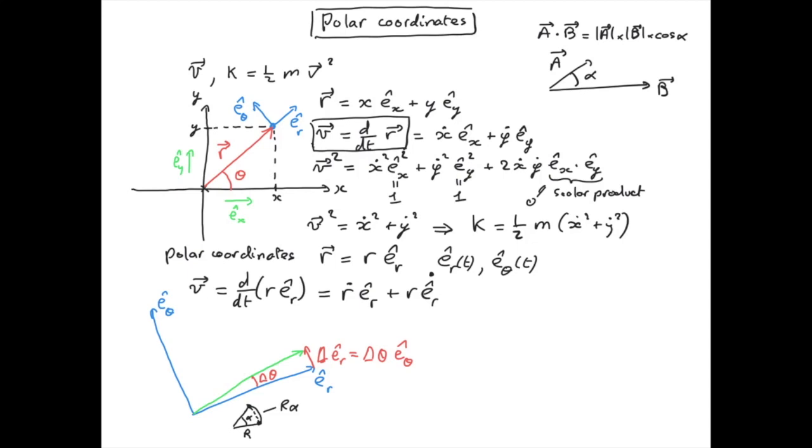Dividing both sides by delta t, we see that what we have looks very much like time derivatives. And indeed, if we take delta t very small, then that's the definition of time derivative. Therefore, the time derivative of e_r is equal to the time derivative of theta times the vector e_theta.